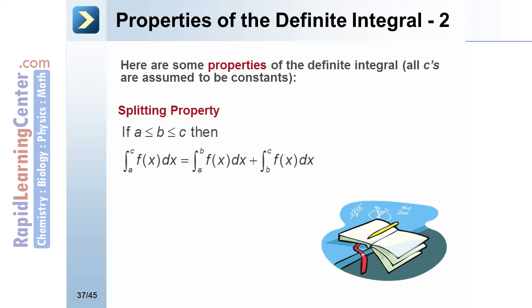Splitting property: if a is less than or equal to b, which is less than or equal to c, then the integral from a to c of f of x is equal to the integral from a to b of f of x plus the integral from b to c of f of x.